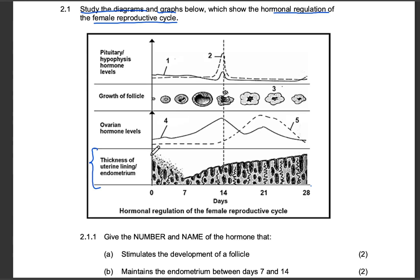The first block shows the thickness of the uterine lining, or endometrium. We can see that the endometrium is breaking down from day zero to day seven, then it starts to thicken just after day seven and continues to thicken after day 14.